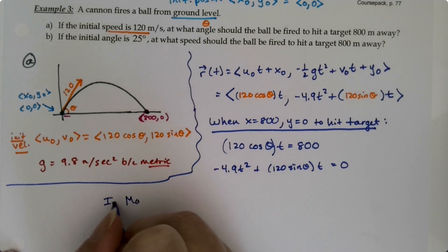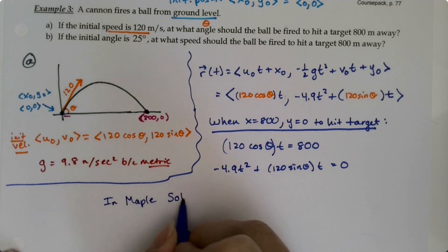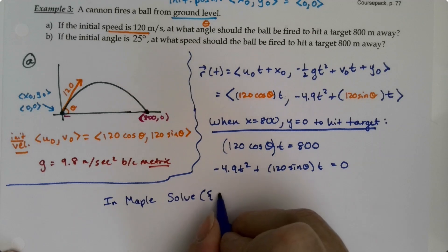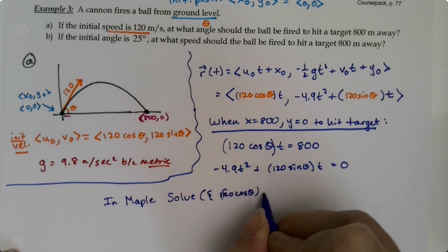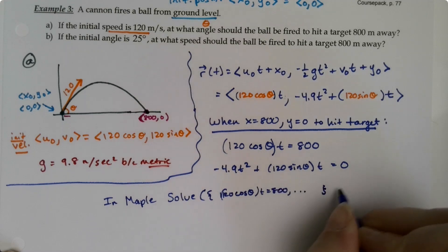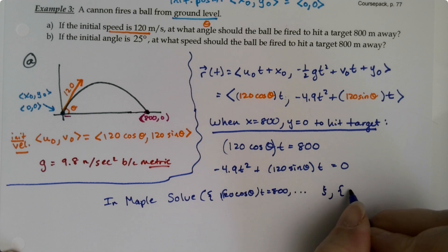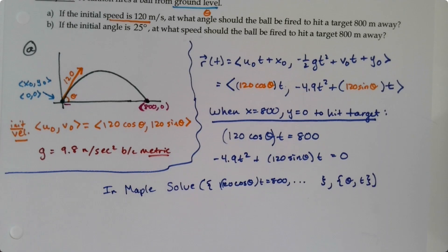So in maple, we've actually seen this before. We'll use the solve command. And then you'll type your equations. So 120 cosine of theta t equals 800, comma, and we'll fill that out, comma, and then theta, comma, t. So let me go type that in so you can see what it looks like.